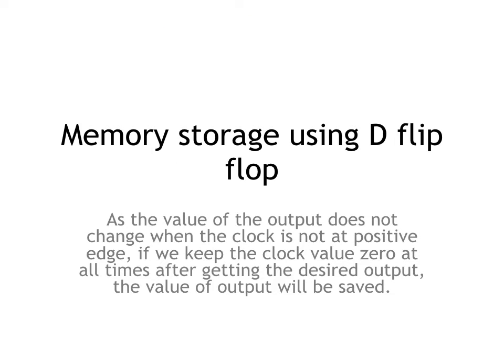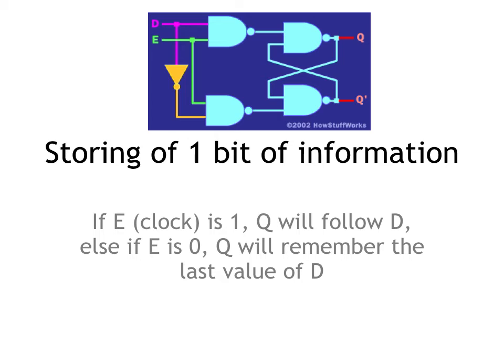Memory storage using D flip-flops works as follows: since the value of the output does not change when the clock is not at a positive edge, if we keep the clock value at 0 after getting the desired output, the output value will be saved irrespective of whatever input is given after that. A D flip-flop can store one bit of information — if the clock is 1, the output follows the input; if the clock is 0, the output remembers the last value of the input.